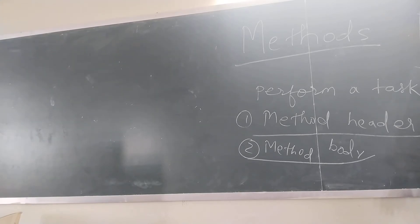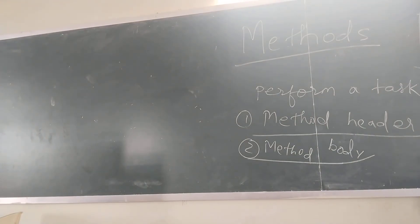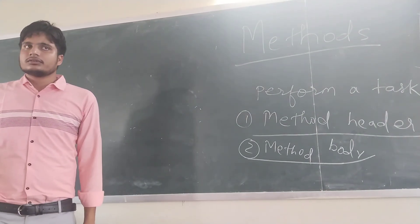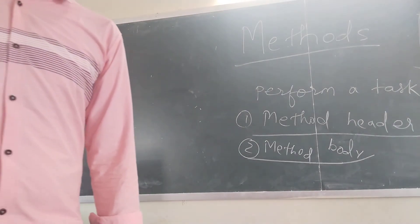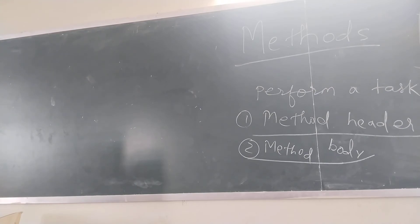System.out.println(c). This is the method. I told you in C language it is called a function, and here in Java it is called a method — it is the same thing, read as method. So, write down this example: sum(int a, int b) with body containing int c = a + b and System.out.println(c).